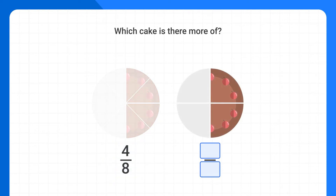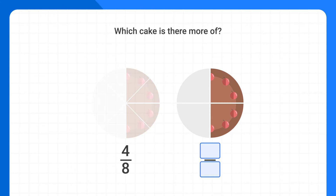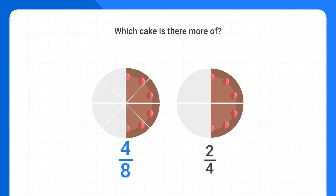But if we look at this cake, we can see it's been cut into a total of 4 pieces, and that we have 1, 2 pieces left, so we have 2 fourths of this cake. So how is it that 4 eighths is the same as 2 fourths?